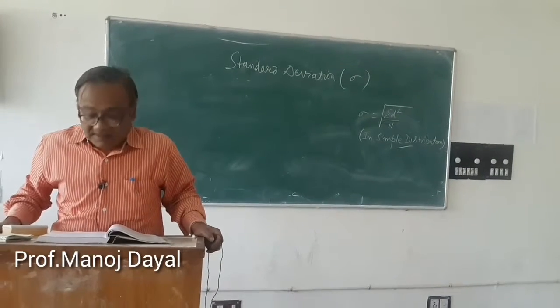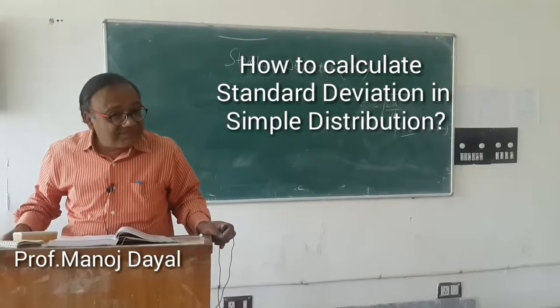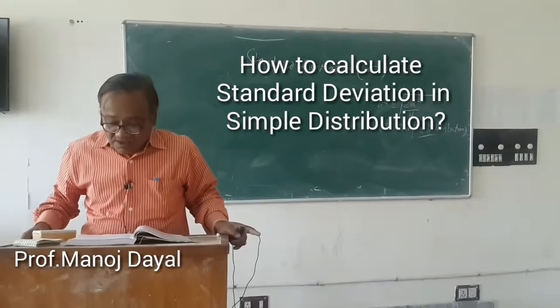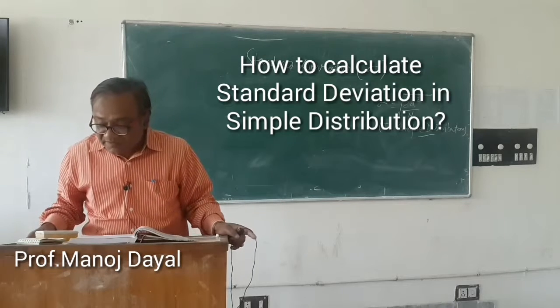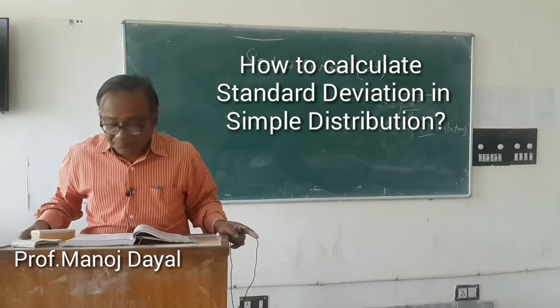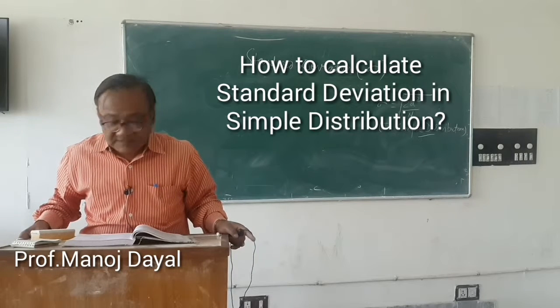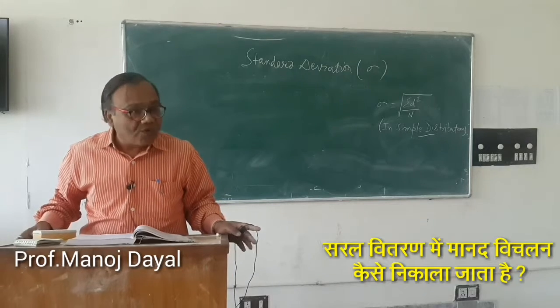The question is, find the standard deviation of the following number of press conferences organized by the Press Information Bureau: 12, 9, 8, 7, and 4.